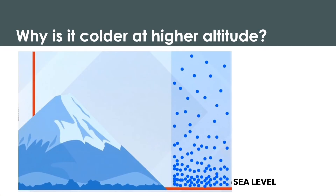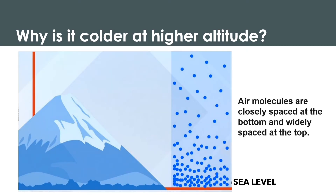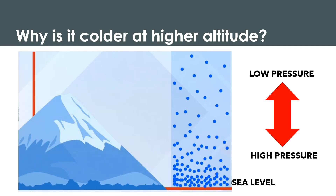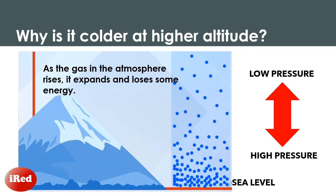This happens due to varying amounts of gas molecules at different altitudes. Air molecules are closely spaced at the bottom and widely spaced at the top. This results in higher pressure at lower altitudes and lower pressure at higher altitudes.